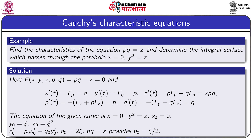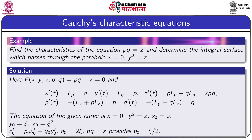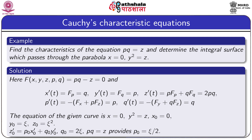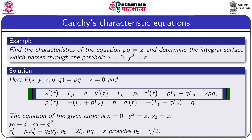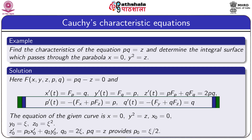As an example, find the characteristics of the equation pq = z and determine the integral surface passing through the parabola x = 0, y² = z. Here F = pq − z = 0, so Cauchy's characteristic equations are: x′ = F_p = q, y′ = F_q = p, z′ = pF_p + qF_q = 2pq, p′ = −(F_x + pF_z) = p, q′ = −(F_y + qF_z) = q.